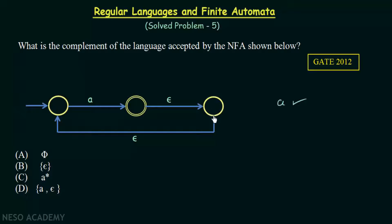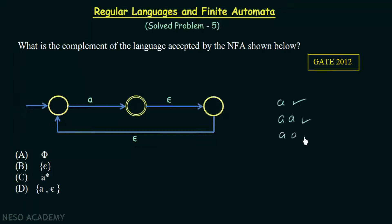After reaching the final state with A, if we get the empty symbol epsilon, it moves to the intermediate state. And from that state, epsilon brings it back to the starting state. If we then get A again, it goes back to the final state. So we are getting two A's now. It continues like this, meaning any number of A's will be accepted by this NFA.